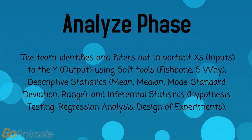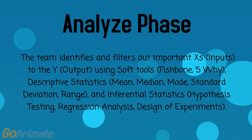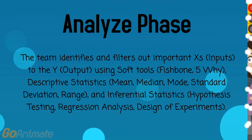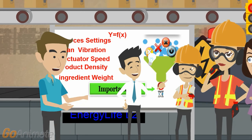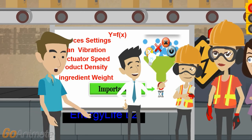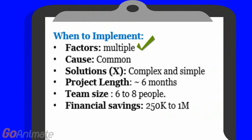In the Analyze phase, the team identifies and filters out important X's (inputs) to the Y output using soft tools such as fishbone diagrams, 5 Whys, and descriptive and inferential statistics. Bob and his team identify and prioritize all important inputs (X's) impacting the output (Y), which is the weight of the can. Multiple factors influence process capability, such as product density, initial ingredient weights, conveyor height, alignment and transition, process settings, and actuator speed. The process continues to produce approximately the same number of defects run-to-run, roughly 35%.